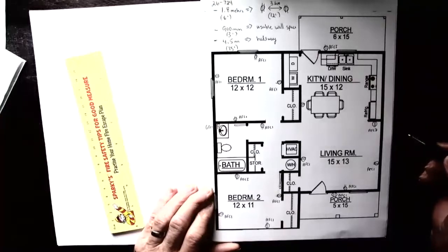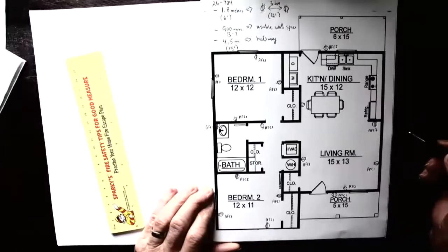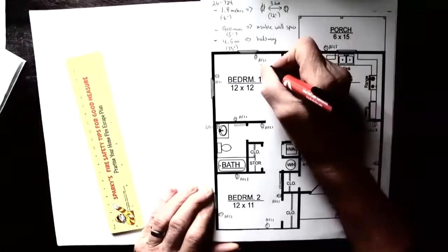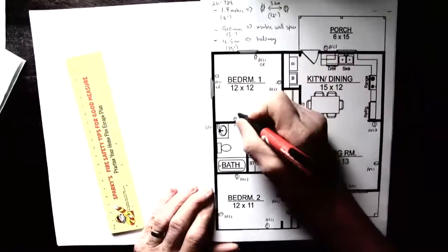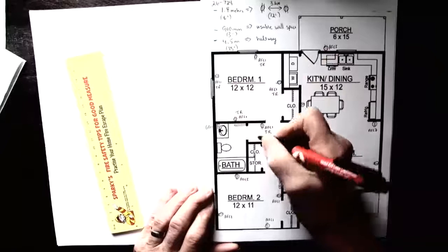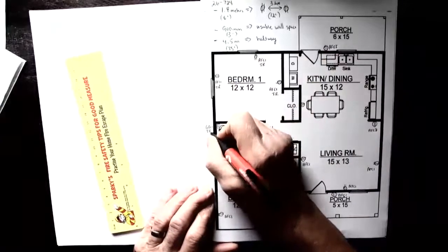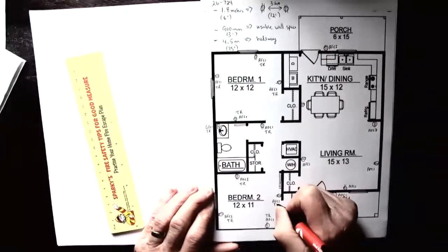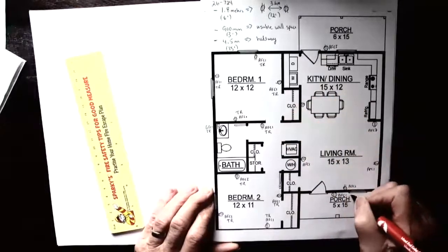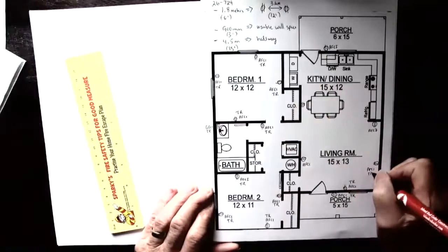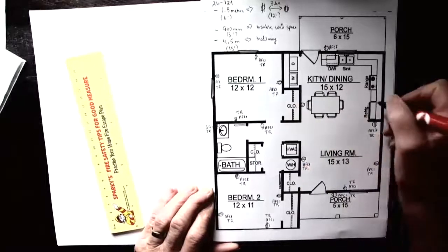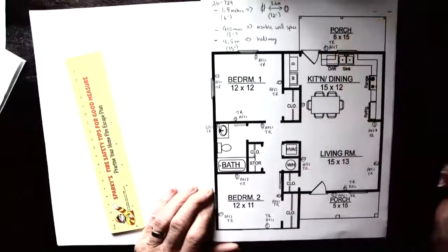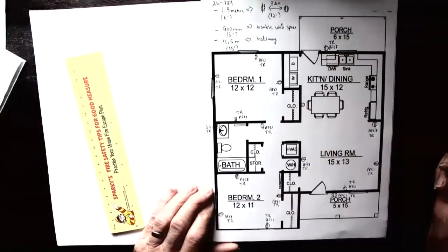The last little piece is the tamper resistant receptacles. These are to prevent children from pushing bobby pins and things like that into the receptacle. The exceptions are above 2 meters or behind dedicated appliances. So basically each one of these receptacles is going to be tamper resistant style receptacle, including the bathroom GFCI. The outside plugs would have to be tamper resistant as well. There's no exception for them.